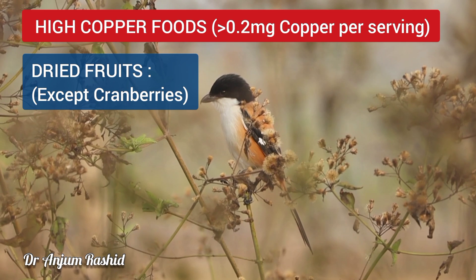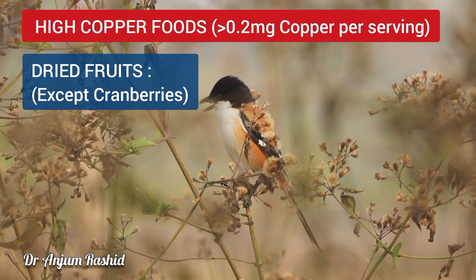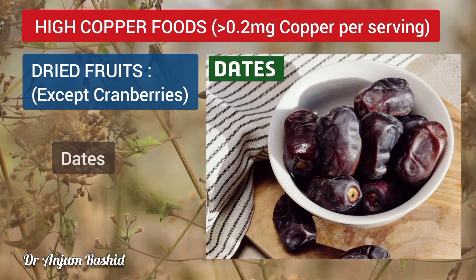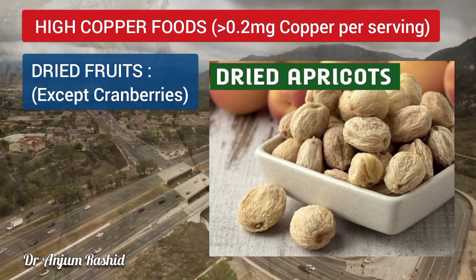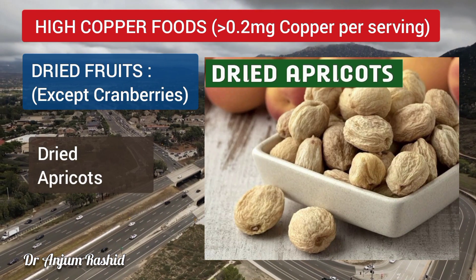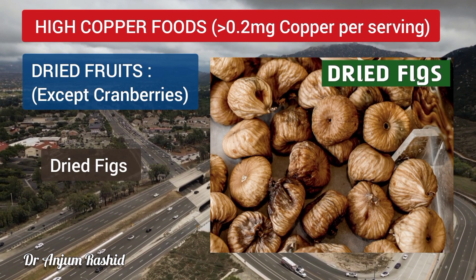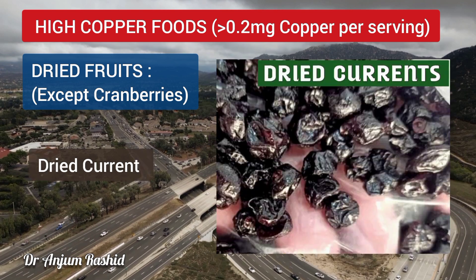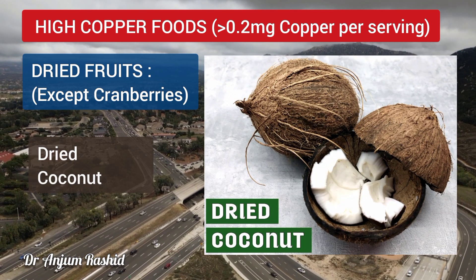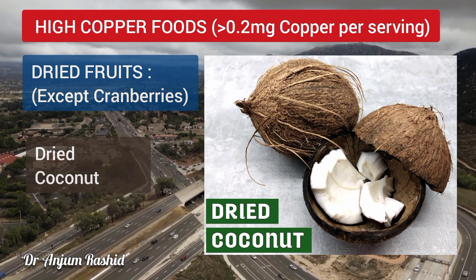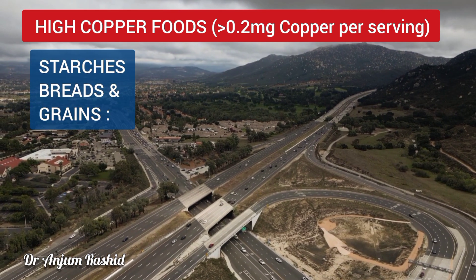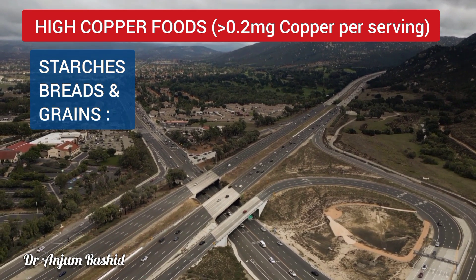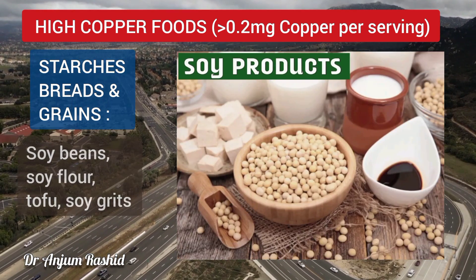High copper fruits include dried fruits except cranberries — dates, dried apricots, prunes, dried figs, raisins, dried currants, and dried coconut. High copper starches, breads, and grains include soybeans, soya flour, tofu, and soy grits.